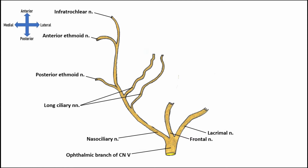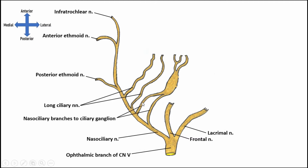When the sclera or cornea gets touched, the long ciliary nerves convey those sensations from the eye itself. We also have nasociliary branches going to the eye via what are called the nasociliary branches to the ciliary ganglion. From the ciliary ganglion we have several short ciliary nerves. These are essentially more nasociliary branches going to the eye, passing through the ciliary ganglion and doing exactly what the long ciliaries do — but with the ciliary ganglion placed in the way.